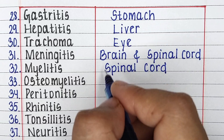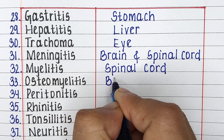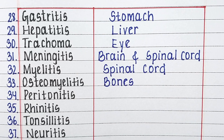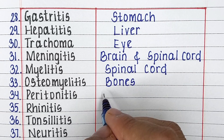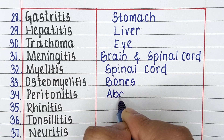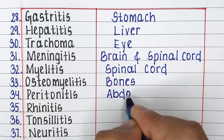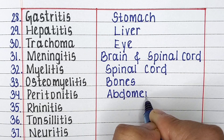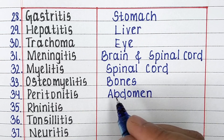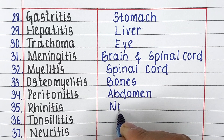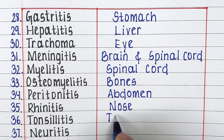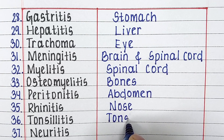The next disease in our list is osteomyelitis. Osteomyelitis is a disease related to bones. The next disease in our list is peritonitis. It affects the abdomen. Next disease is rhinitis. It primarily affects the nose.